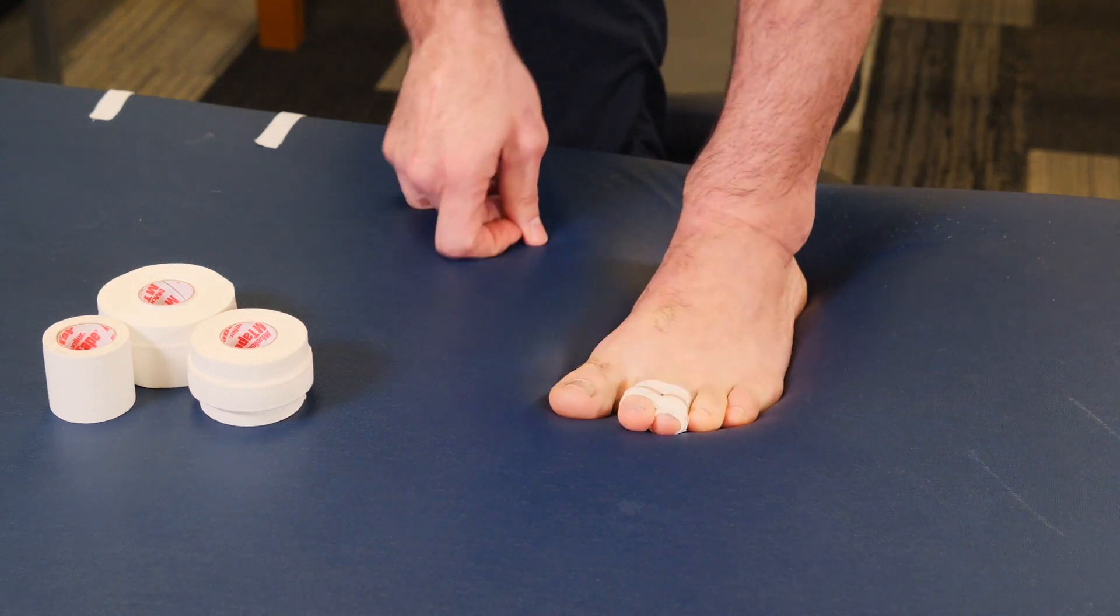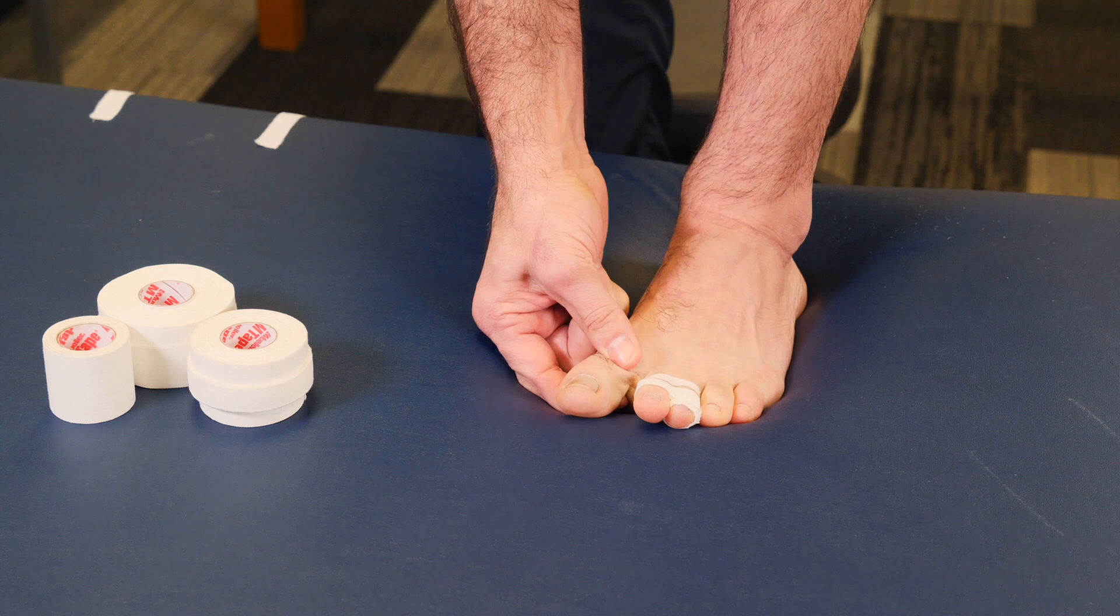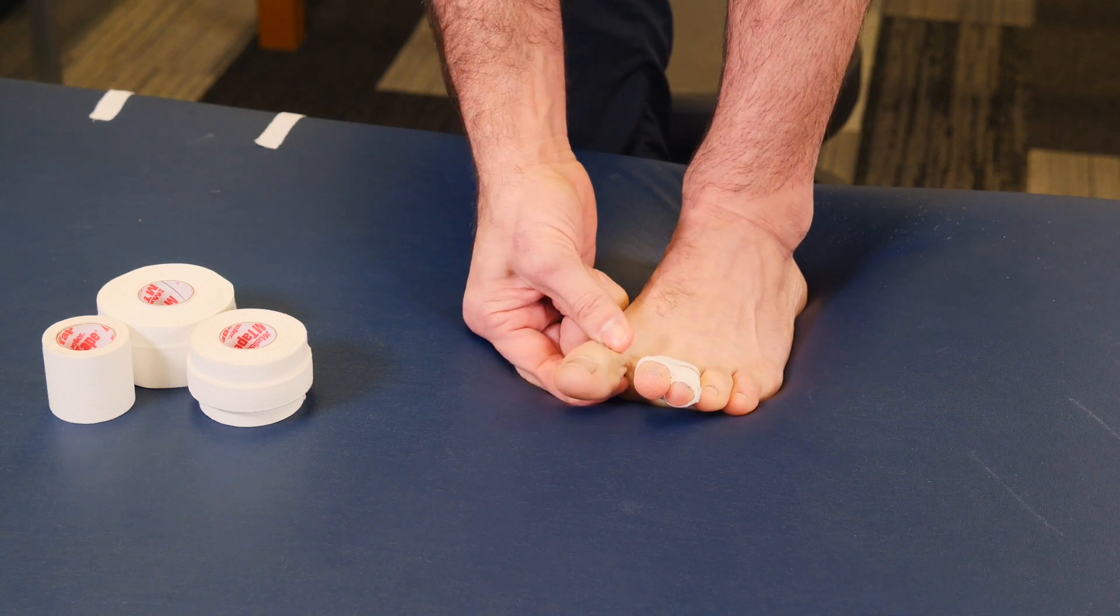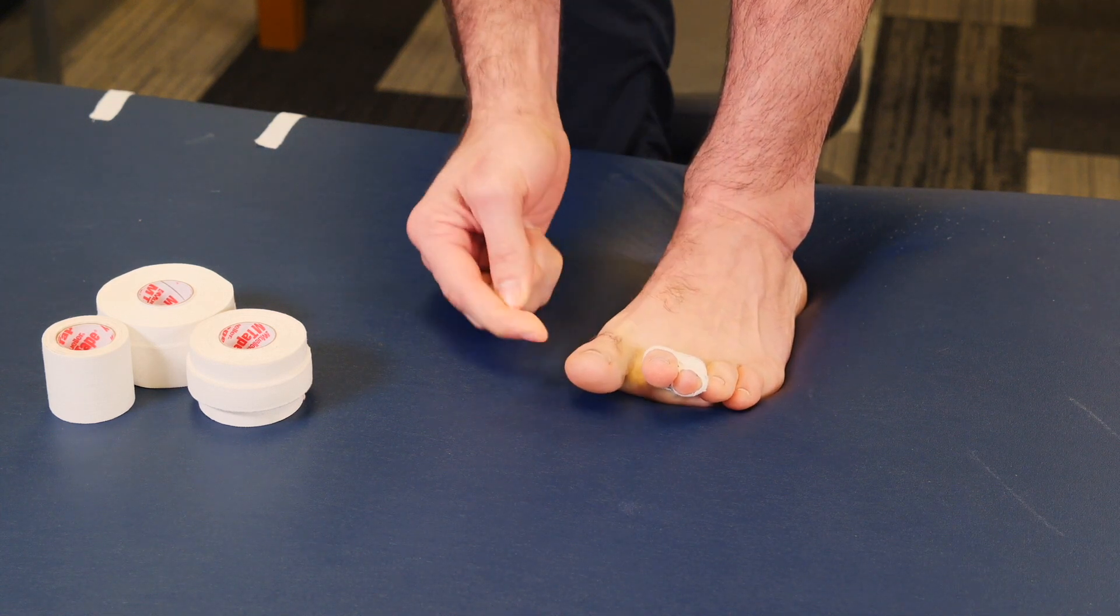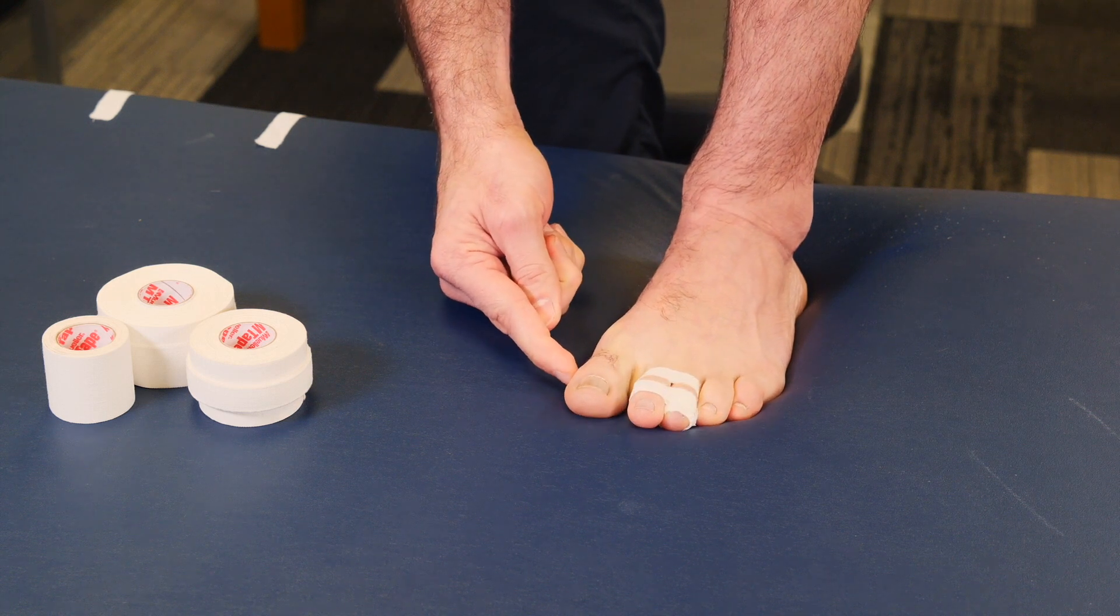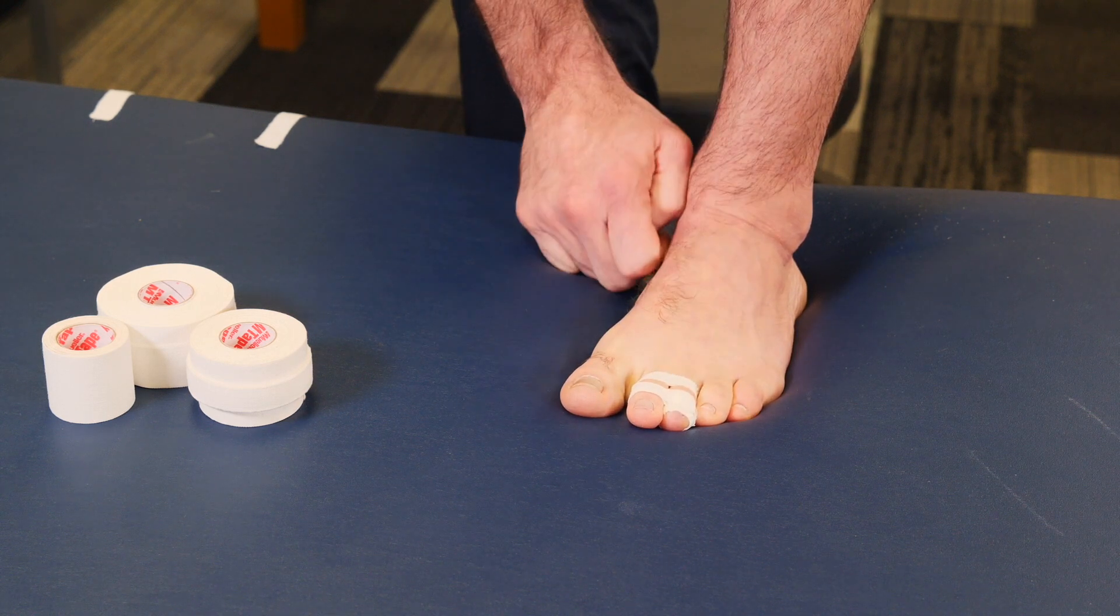If you're injuring your big toe, we have another technique for that. We're just going to go ahead below the joint and support the ligaments here because you only have one of those joints, which is different from these guys that have two.